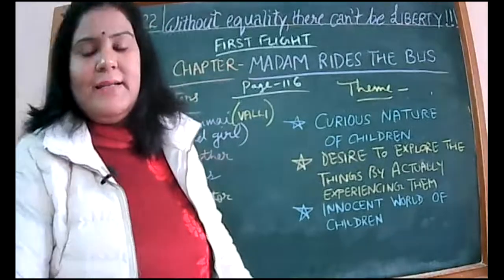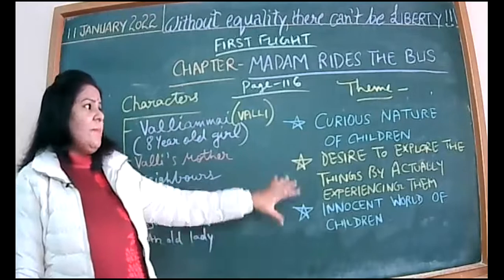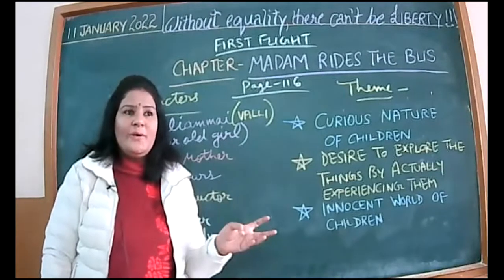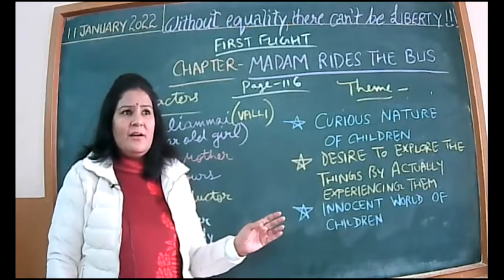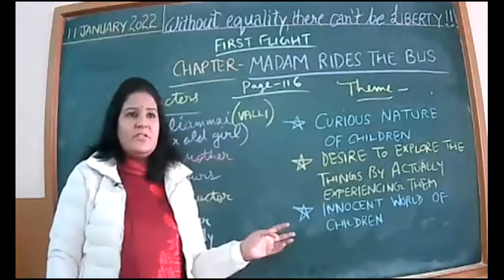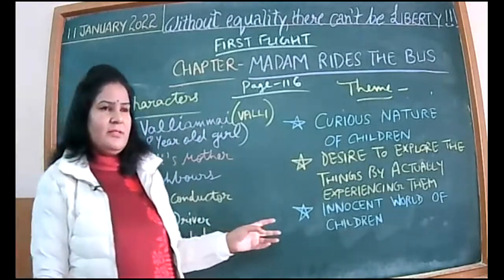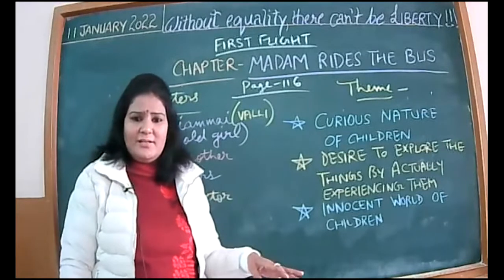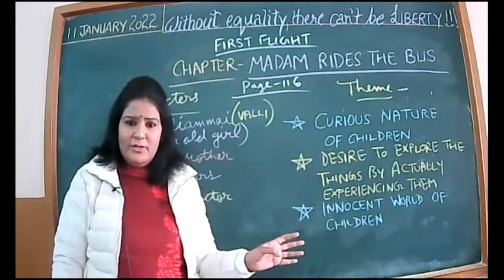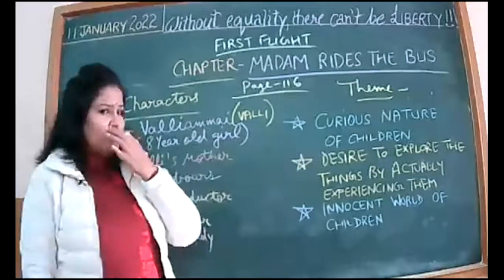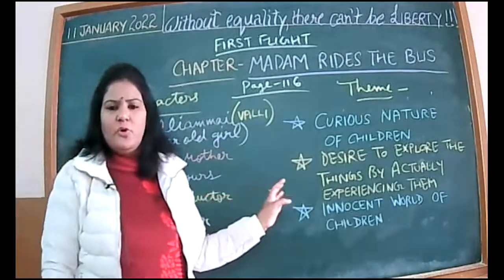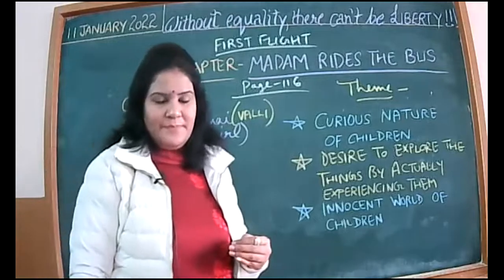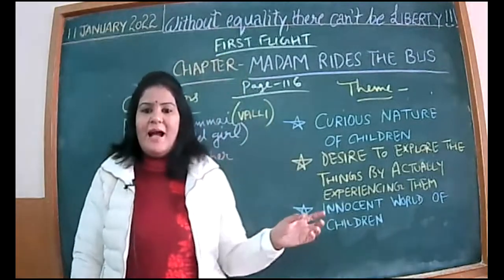The next theme is the innocent world of children — how a child thinks. This chapter teaches us we should have one-to-one conversations with our children to know what's going on in their minds. Many children get lost every day or are abducted. This chapter is not about child abuse or trafficking — it's more like the movie 'Baby's Day Out,' if you haven't seen it, do watch it.